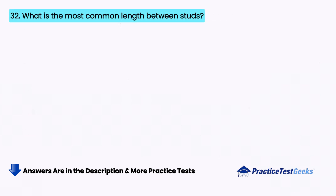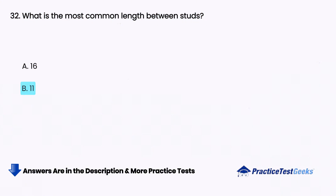What is the most common length between studs? A. 16 inches, B. 11 inches, C. 15 inches, D. 19 inches.